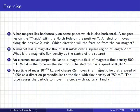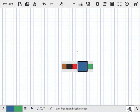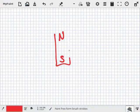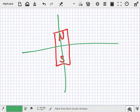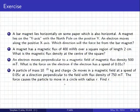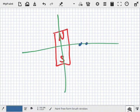Okay. A bar magnet lies horizontally in some paper. The magnet lies in the Y axis. Okay. So what you have is, you have the magnet north here, south here. And then you have, this is the X axis, this is the Y axis. And an electron moves this way.